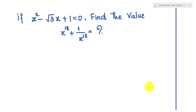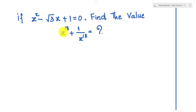Hello everyone. Welcome to Education Key Channel. Today I have one exercise on screen. If x squared minus square root 3 times x plus 1 equals 0, find the value of x to the power 18 plus 1 over x to the power 18.